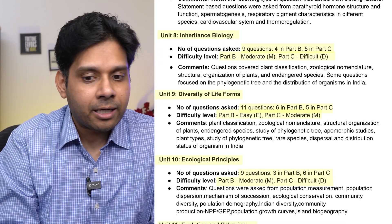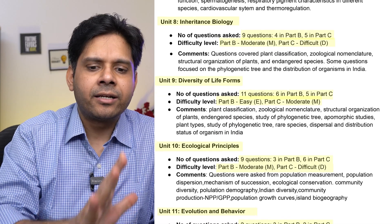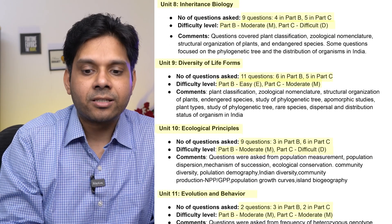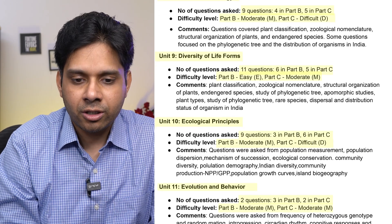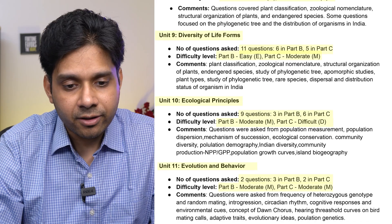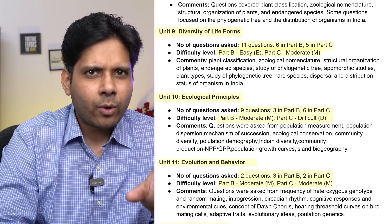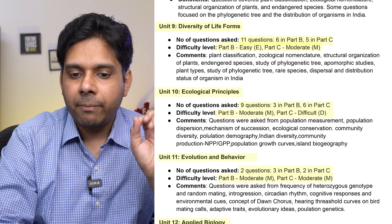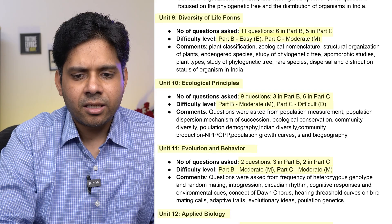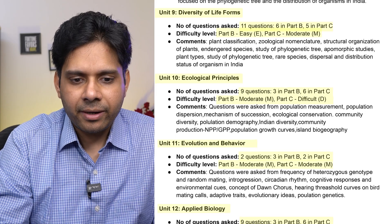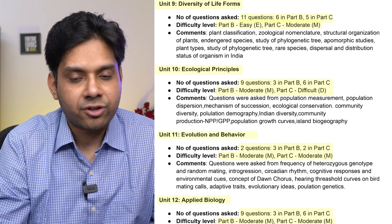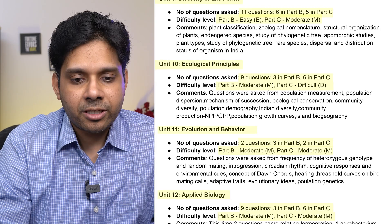Unit 8, Inheritance Biology, had nine questions again — four in Part B and five in Part C. Part C questions were difficult, covering classification of plants, zoological nomenclature, structural organization of plants, and endangered species. Unit 9, Diversity of Life Forms, had 11 questions — six in Part B and five in Part C — a double-digit, very important unit. Part B was easy and Part C was moderate. More questions came from plant classifications, zoological nomenclature, and structural organization of plants.